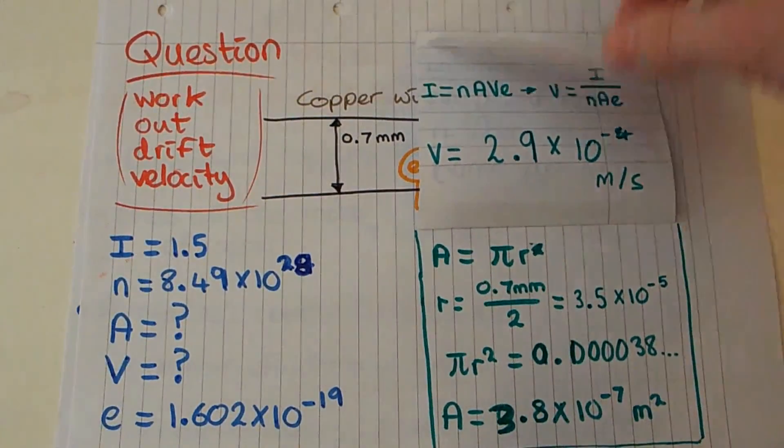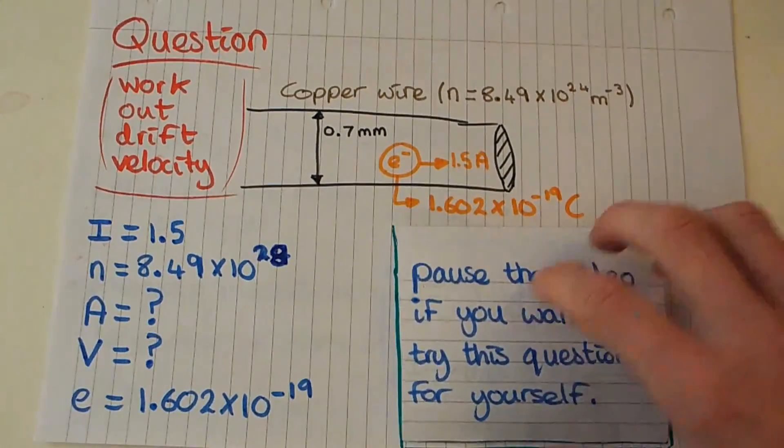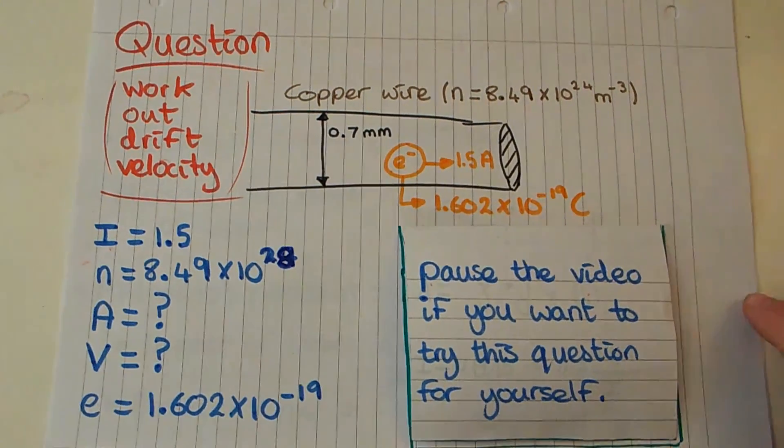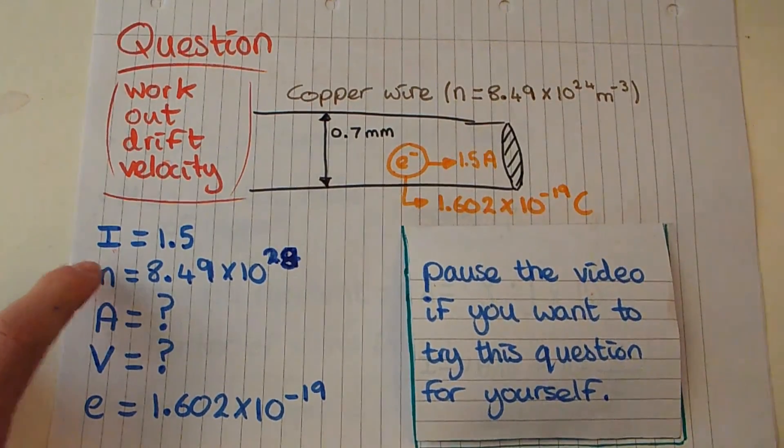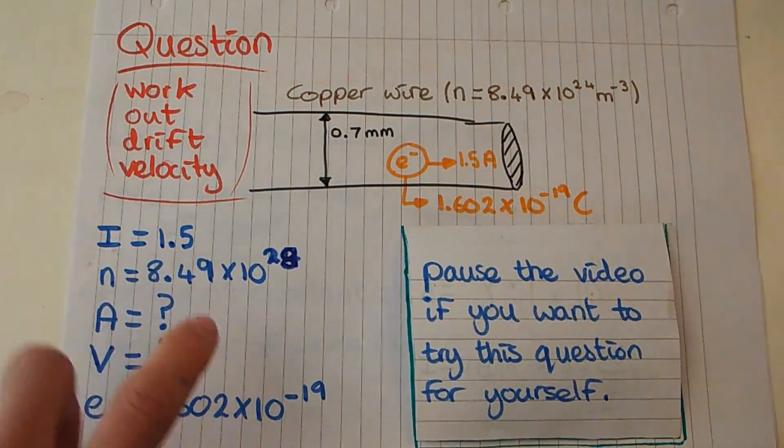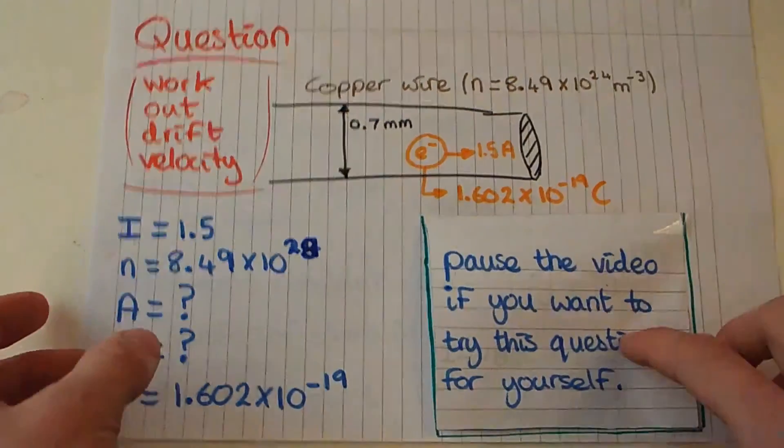Now if you want, you can go for another question that I'm about to do. I'm going to ask you to show that the electron density of copper is 8.49 times 10 to the 28.